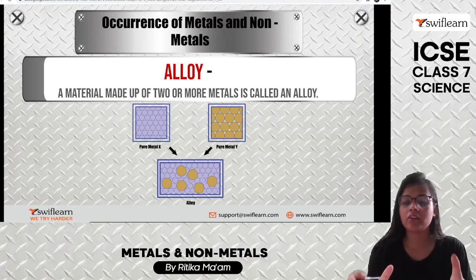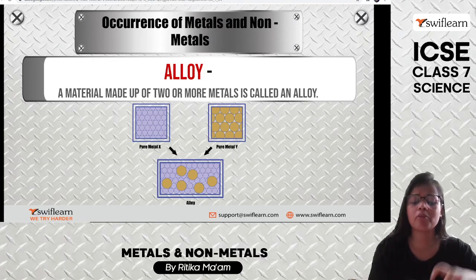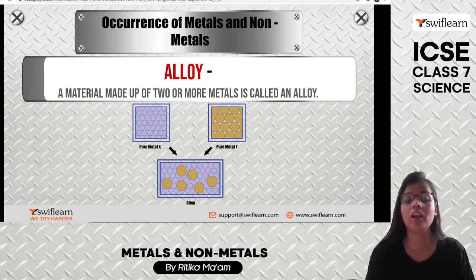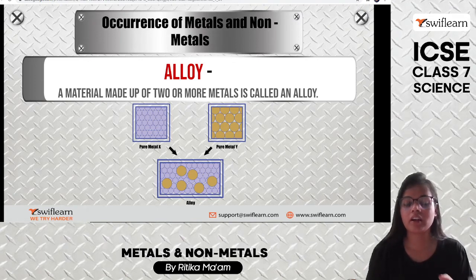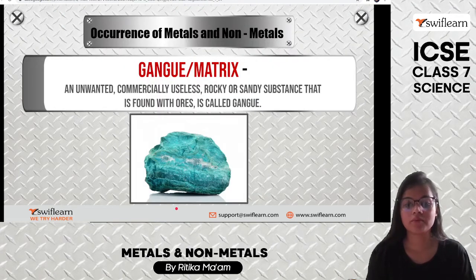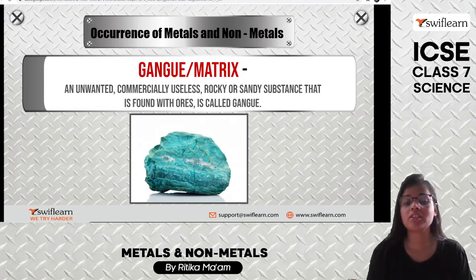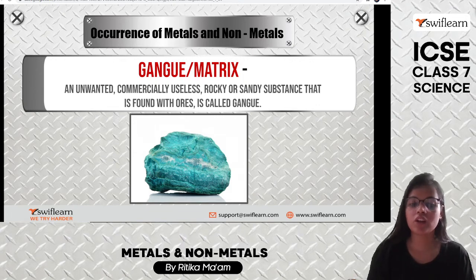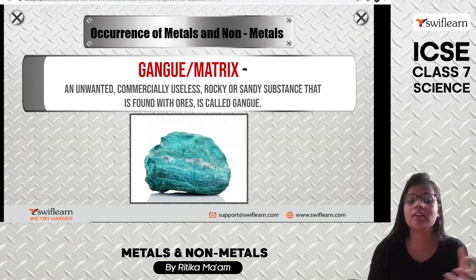Various types of metals combine together to form an alloy. An alloy is a kind of material which has two or more metals in it — it is a mixture made up of two or more metals. An ore is a mineral which contains metal — so minerals that contain metal are called ores. Gang, or matrix, is the unwanted, commercially useless rocky or sandy substance found with ores — it is usually found with ores but is useless and unwanted.